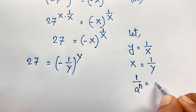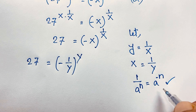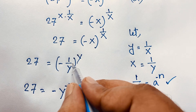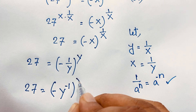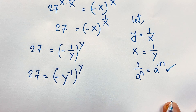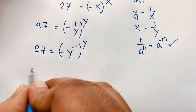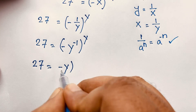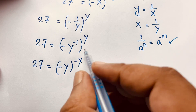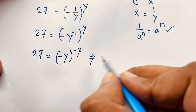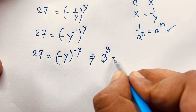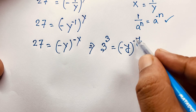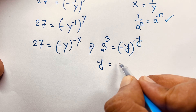Using the formula 1 over a to the power n equals a to the power negative n, I apply this here. So 27 equals negative y to the power negative 1. Since 27 equals 3 to the power 3, comparing both sides we get 3 to the power 3 equals negative y to the power negative y. Comparing these, we find y equals negative 3.